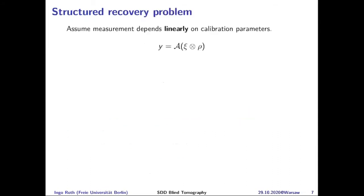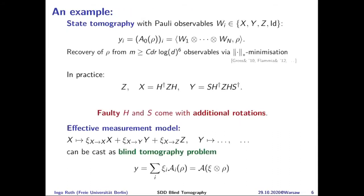A question arises about the first equation: state tomography of low-rank density matrices in the compressed sensing setting. In practice, you run many experiments and get statistics. The key point is that there's a combination of the number of measurement settings and the number of samples. The compressed sensing literature injects randomness into the measurement setting, giving a linear inverse problem with a random measurement map, from which recovery guarantees can be shown.